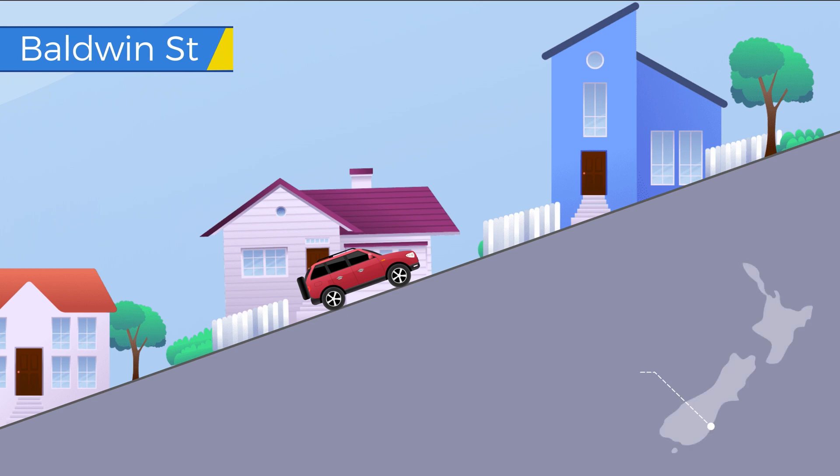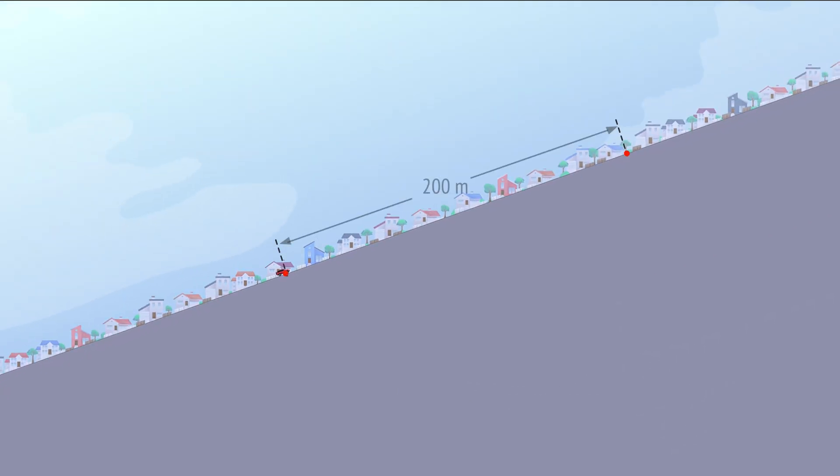Baldwin Street, in the city of Dunedin, New Zealand, is listed by Guinness World Records as the world's steepest residential street. Along the steepest section of 200 meters, the street rises 65 meters in elevation.